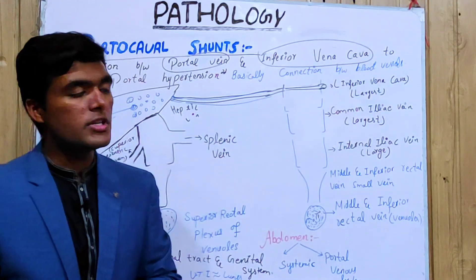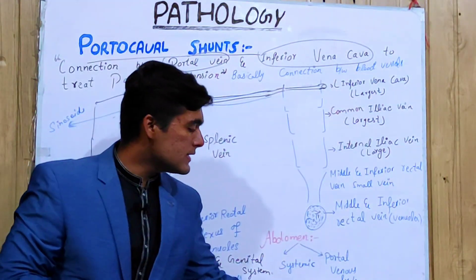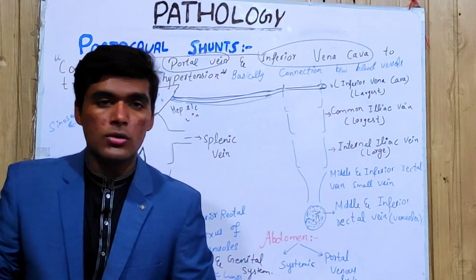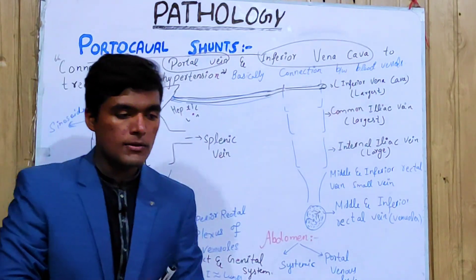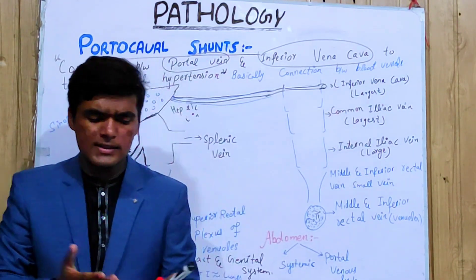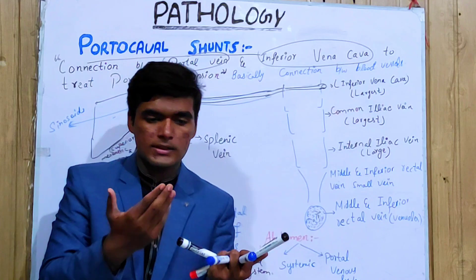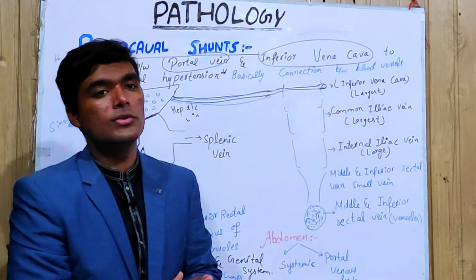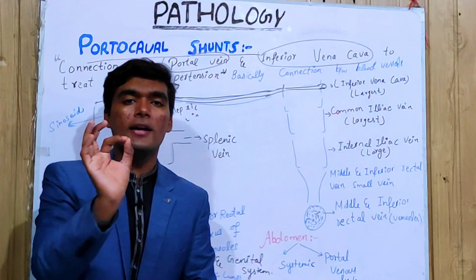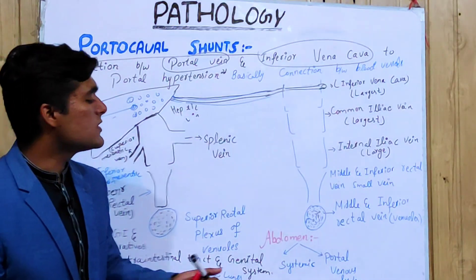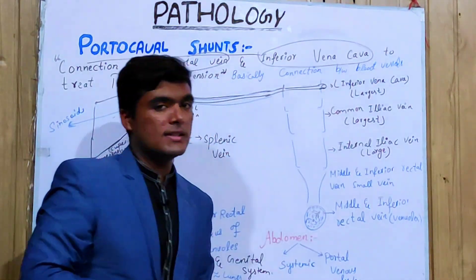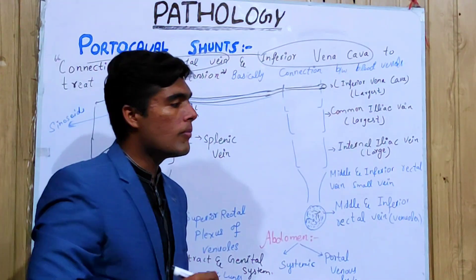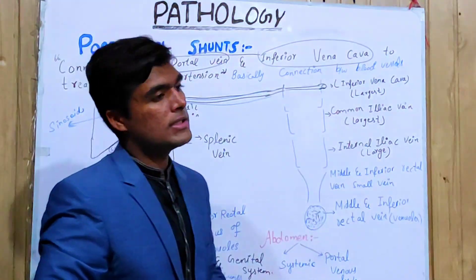In the abdomen, we have two basic types of circulation: one is the portal venous system and one is the systemic system. The portal venous system is a system which starts from venules and, in the same way, ends at venules.